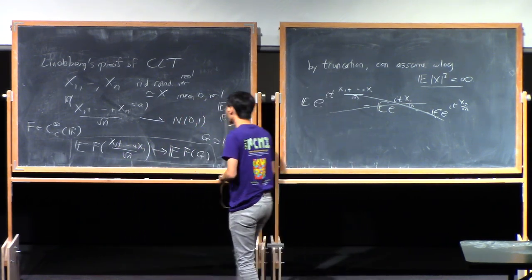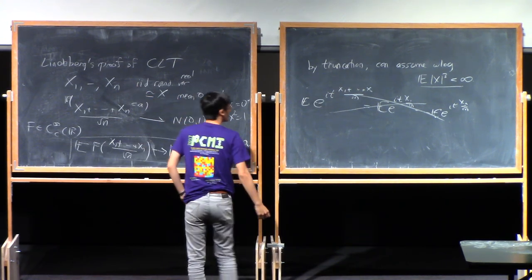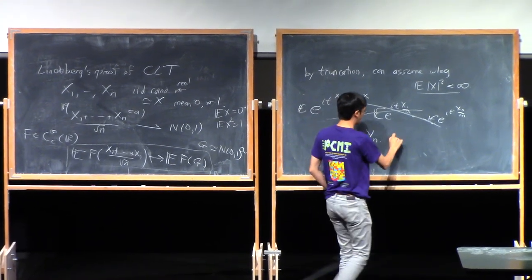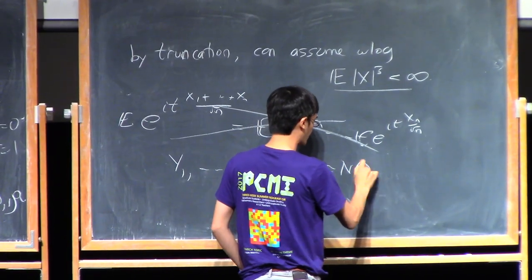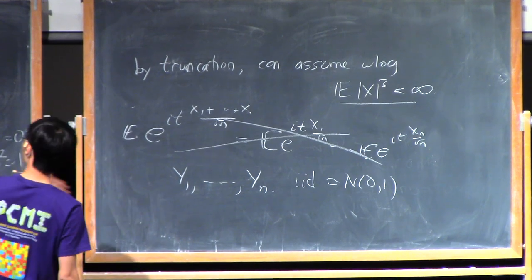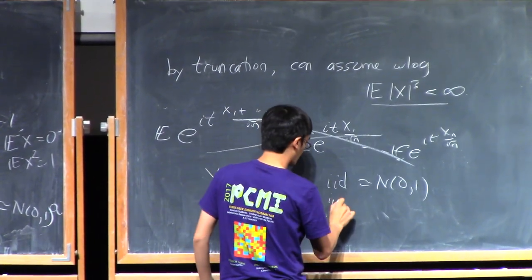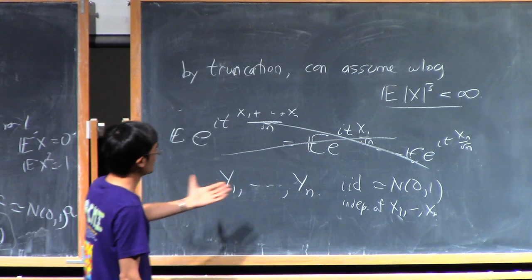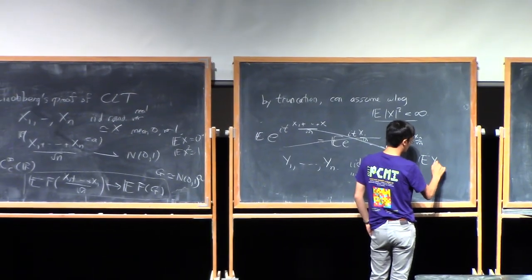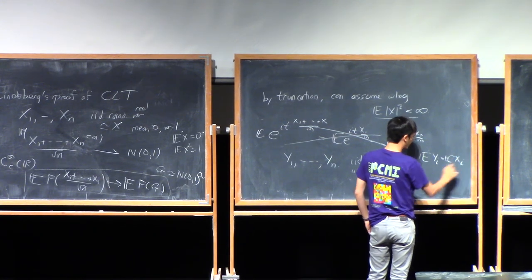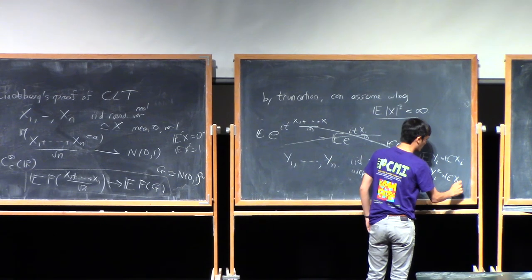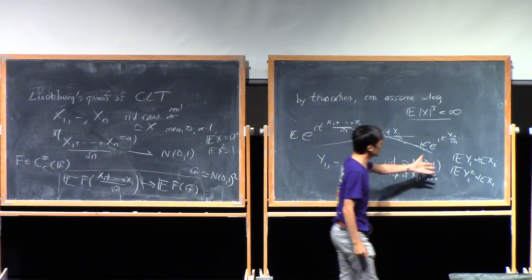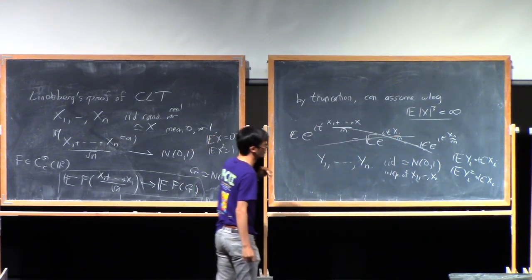Instead, what we do is: these random variables are not Gaussian, but we introduce random variables that are Gaussian — some new random variables that are also independent of each other and of the original variables. So everybody is independent of everybody else. These new Gaussian random variables have the same mean and variance as the original, so they have mean zero and variance one — the same first two moments as your original random variable. The third moment may differ, of course: Gaussians have third moment zero, but the original random variables could have any third moment.